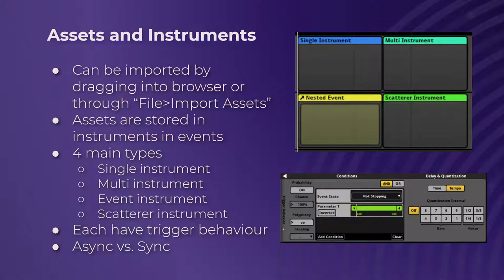Each instrument has different trigger behavior settings. Probability lets you change the probability of the sound playing, which you adjust with the chance slider. Polyphony changes the amount of that event that can play at once, with stealing as an option to choose whether it keeps the current sound playing or steals from the last one. Along with that there's conditions — this is where things get really interesting — allowing you to add parameters so the sound plays depending on the event's state or anything you want. That add condition button is where a lot of the magic happens in FMOD.